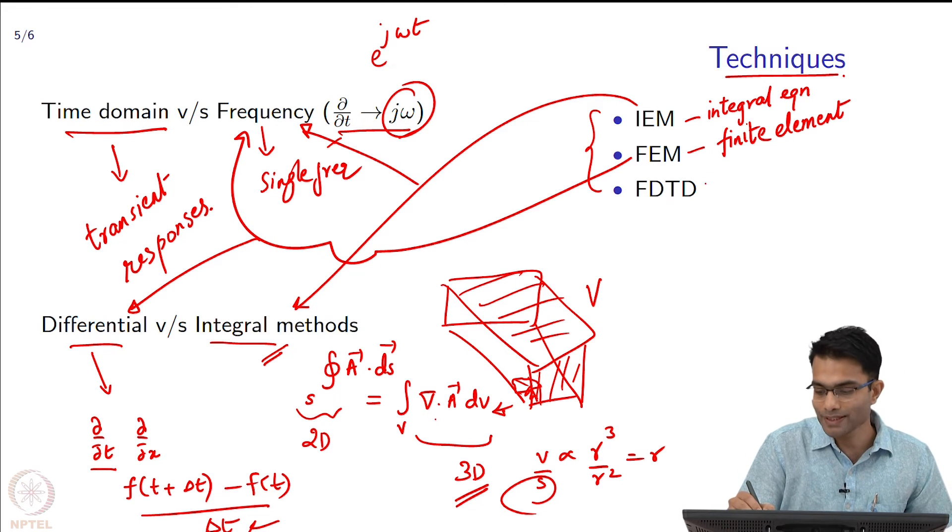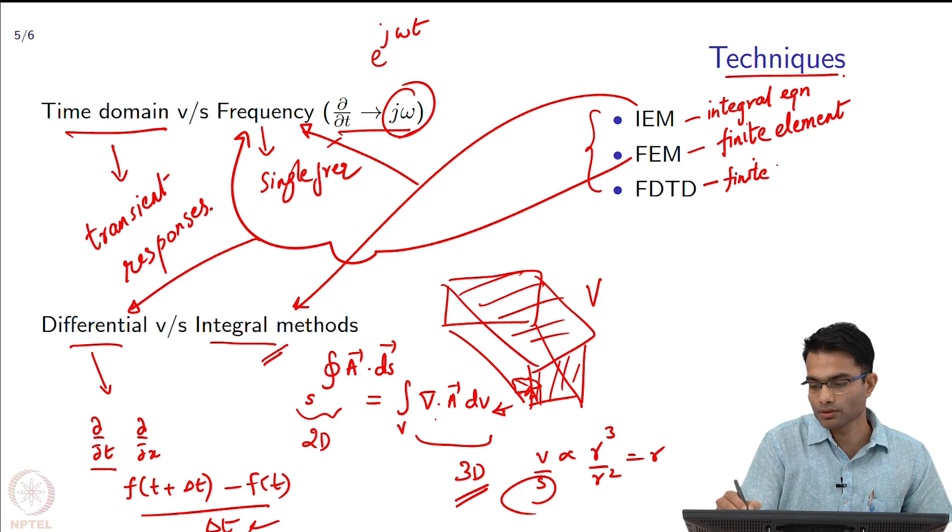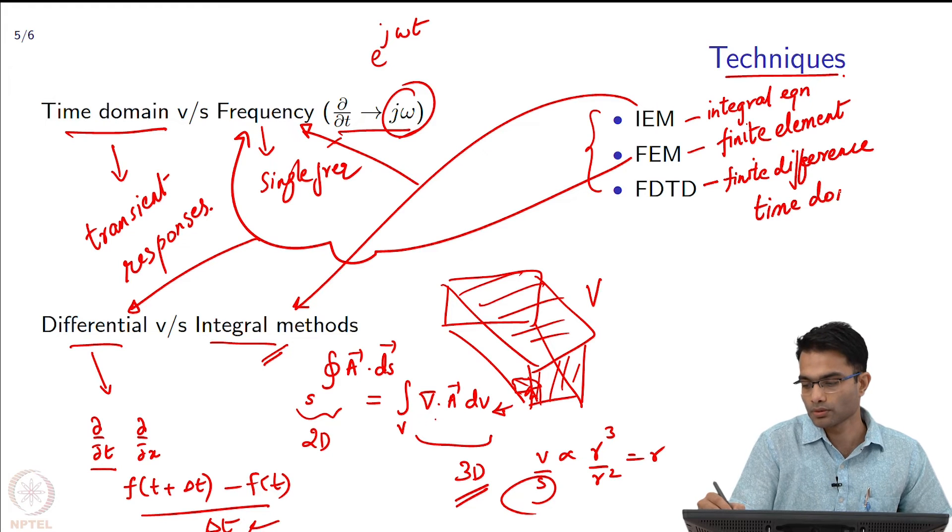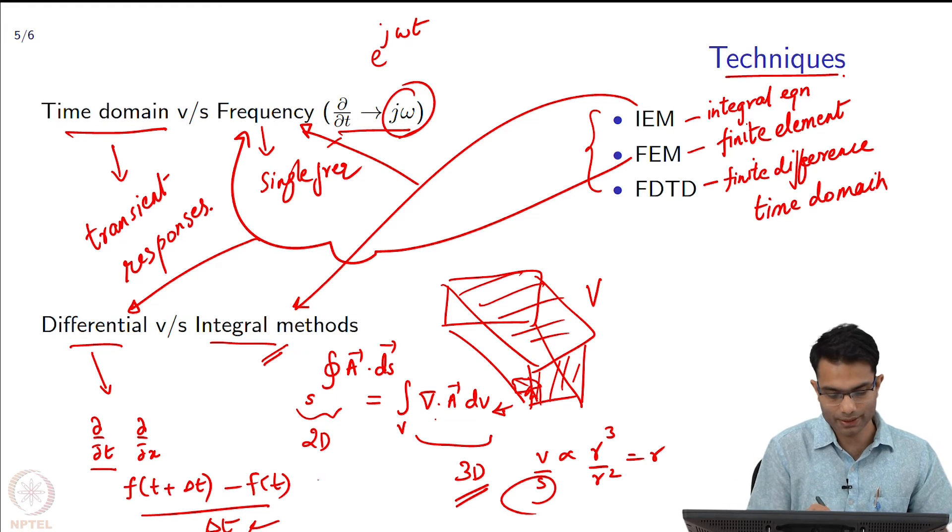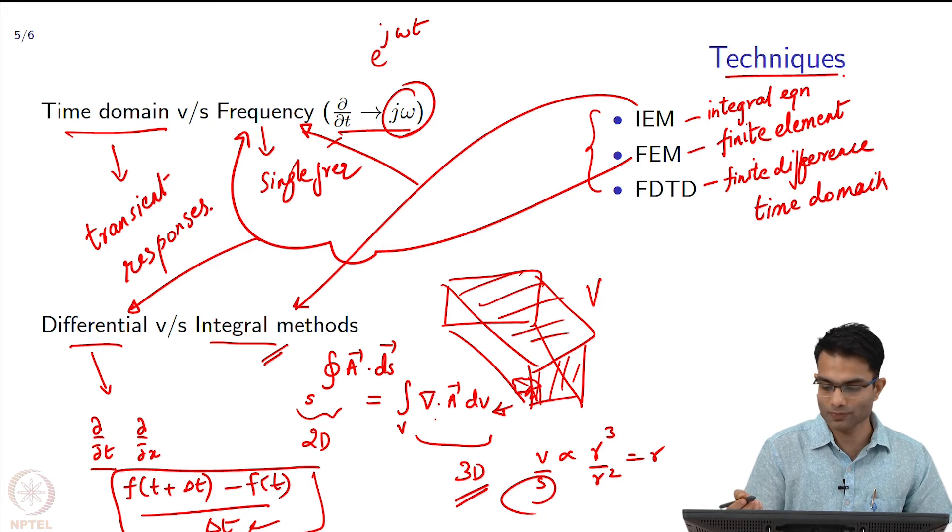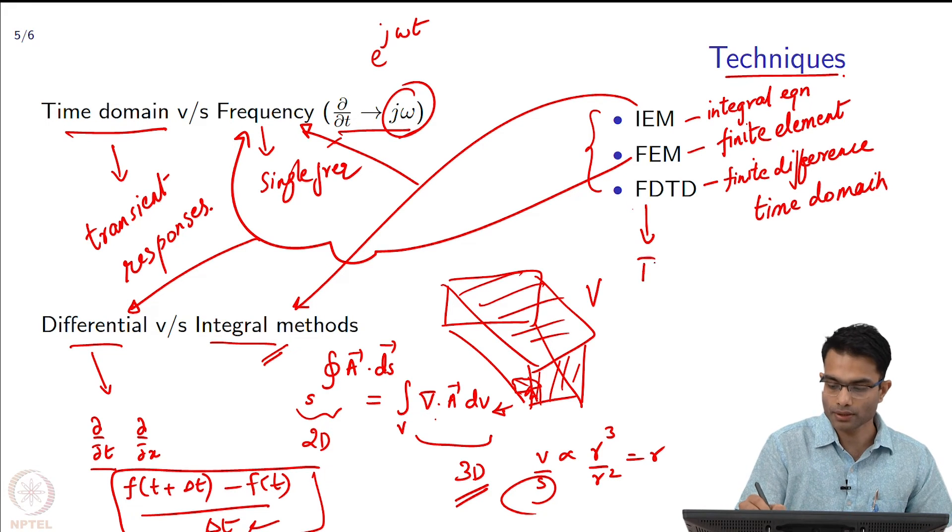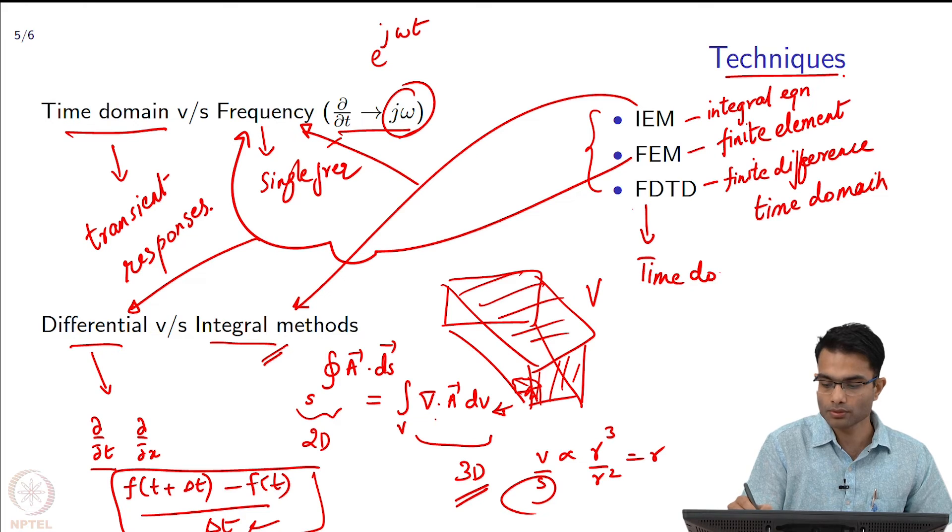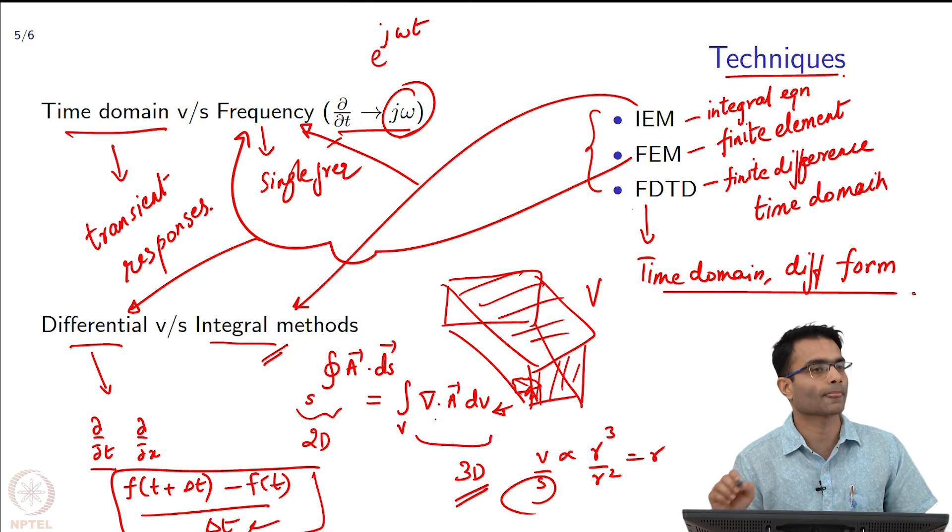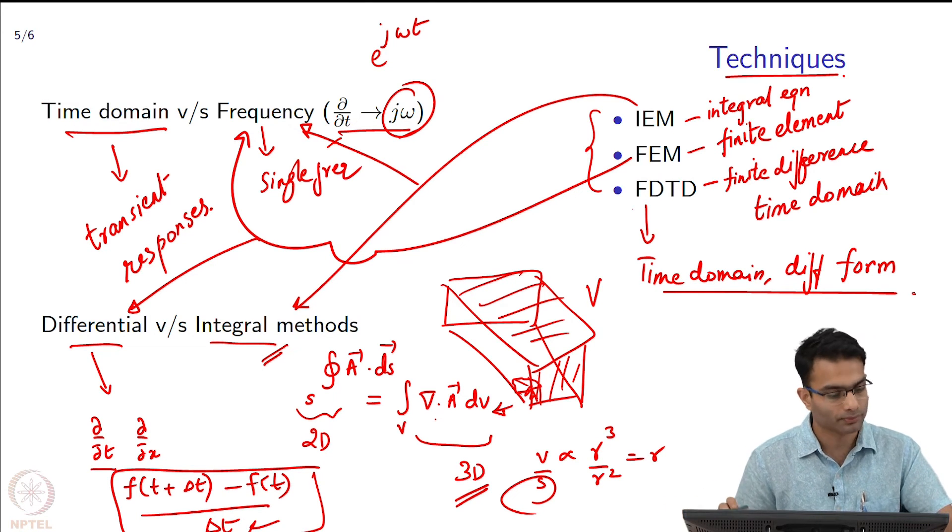Finally we have FDTD, that is finite difference time domain. Basically using the idea of finite differences. As the word almost gives it away, this is going to be in time domain and differential form. Depending on whatever is the problem at hand, we are going to use one or the other.